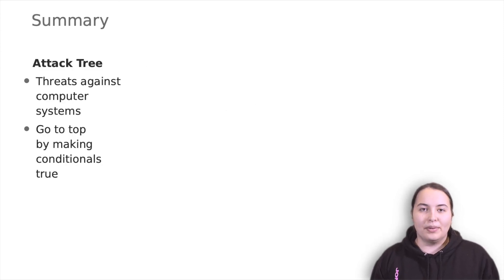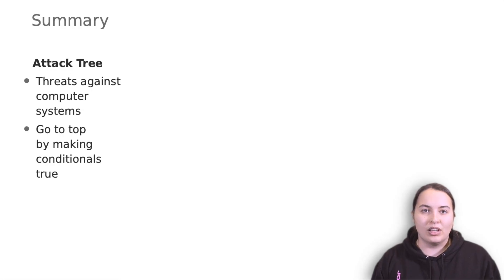So, let's sum up what we have heard. Attack trees model the sequential attacks of an intelligent adversary to defeat a defensive system. We go from the leaves to the top by making conditions true. It focuses on finding possible threats in every design and developing process.